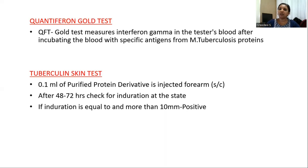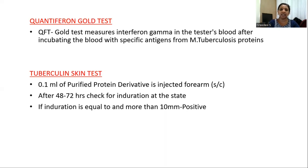For the Tuberculin Skin Test, 0.1 ml of purified protein derivative is injected subcutaneously. After 48 to 72 hours, check the induration at the site. If the induration is in the range of 20 mm or above, it is considered significant.